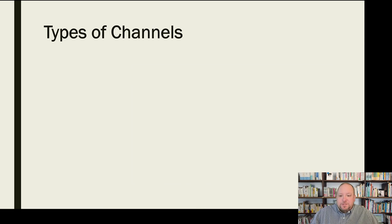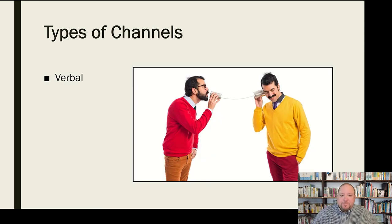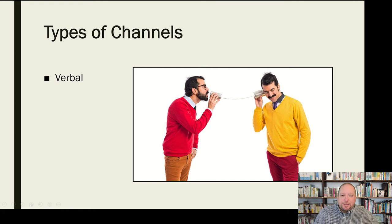First we start with verbal communication. For our definition of verbal communication, we're going to be mostly talking about oral communication — the way that we speak to other people using our voice and language. We're differentiating verbal communication from sending a text message or writing things down. Verbal communication is spoken communication, essentially.